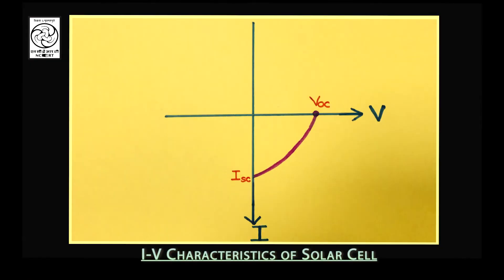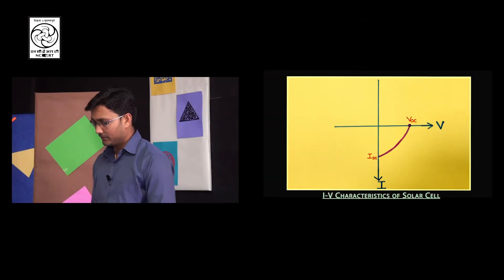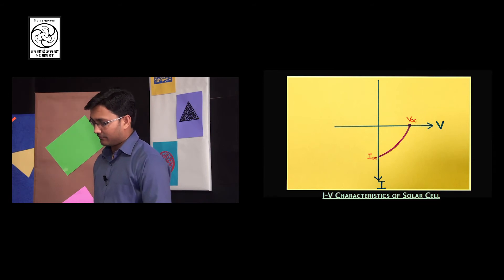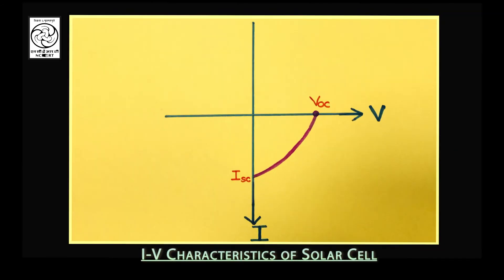Now, can you say something about the variation of current with the intensity of light? Sir, it's evident that the current should increase with increase in intensity of light. Very good. And that's why the solar cell is designed in such a way that a large area is exposed to light. Now, students, the solar cell is a PN junction device, so it has IV characteristics, the graph of which is shown on the screen. Okay, Ruchi, tell me what is the meaning of VOC and ISC in the graph? Sir, VOC means open circuit voltage and ISC means short circuit current. Very good.